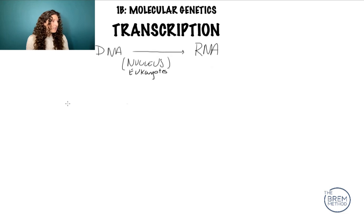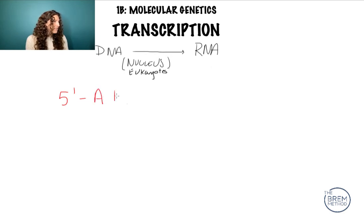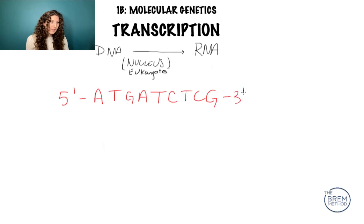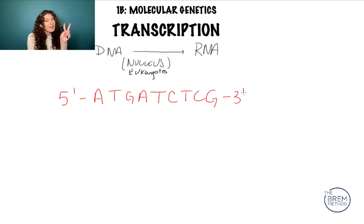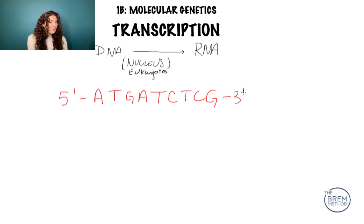I'm going to start by writing out a DNA strand from five prime to three prime. Here's my sequence: A-T-G-A-T-C-T-C-G, and it's three prime at the end. Go ahead, pause this video and write the complementary strand to this DNA strand, because as we know DNA has two strands that are complementary to each other.